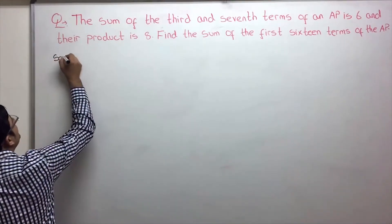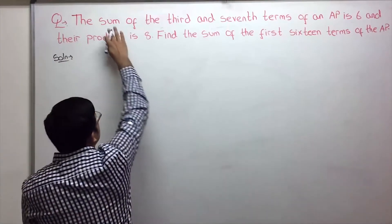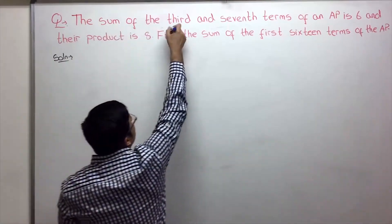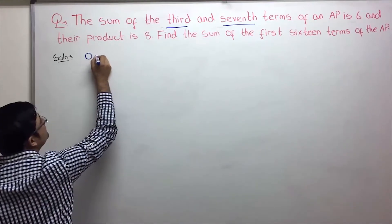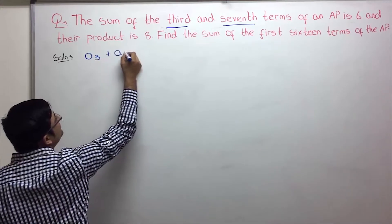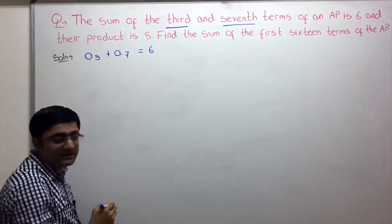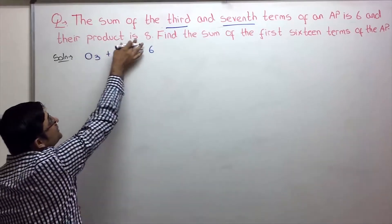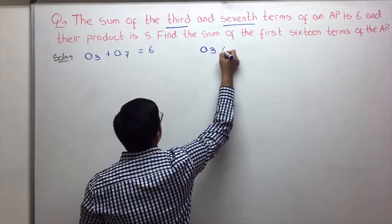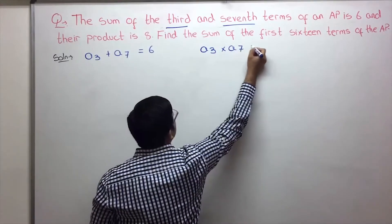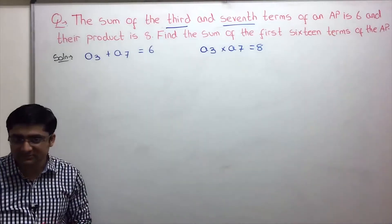The first step is always to write down what is given. The sum of the third and seventh term of an AP is 6, so third term plus seventh term equals 6. Next, their product is 8, meaning the product of the third term and seventh term is 8. Based on this we have to find the sum of the first 16 terms.